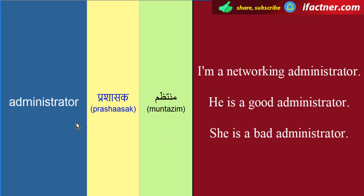Next word hai administrator. Administration kerne waale ko administrator kehtay hain. Administrator ki spelling hai A-D-M-I-N-I-S-T-R-A-T-O-R. Jab bhi koi bada sa lafz ho, toh aap usse do teen hisson mein divide kerke spellings yaad ker saktay hain — jaise admin + istrator = administrator.